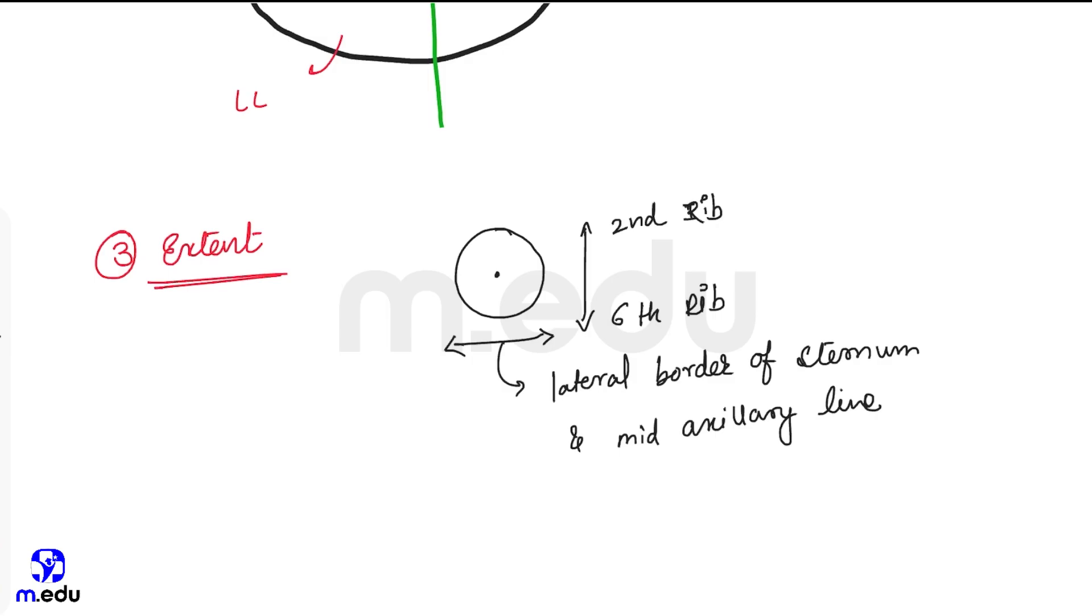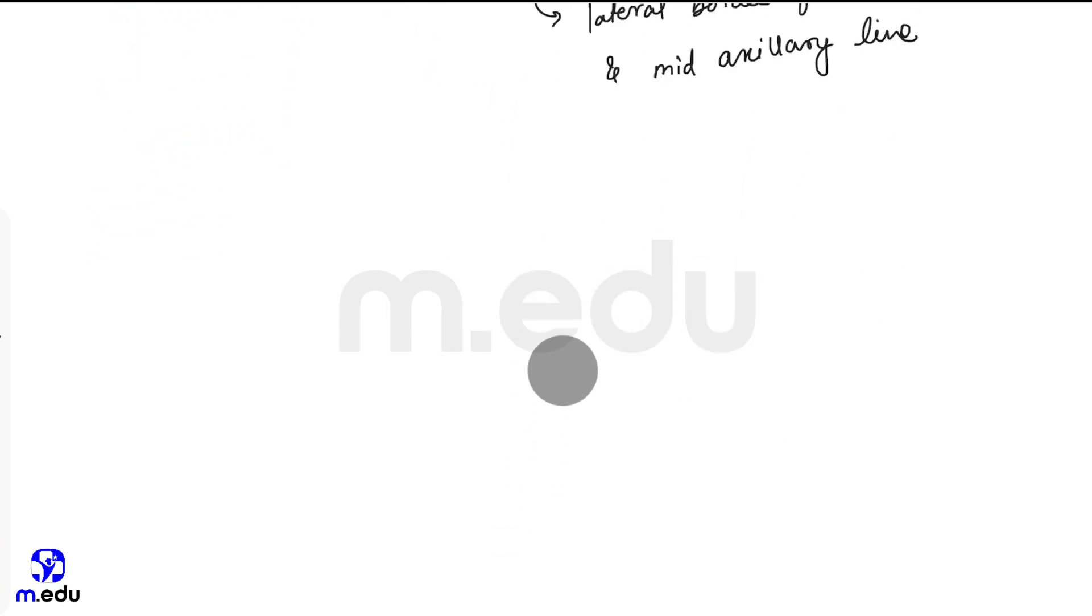The fourth heading: deep relations of mammary gland. First one is deep fascia. Deep fascia is also known as pectoral fascia.